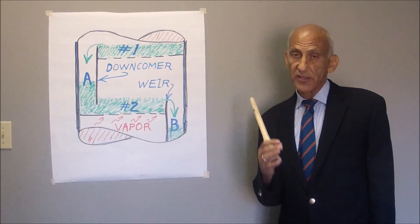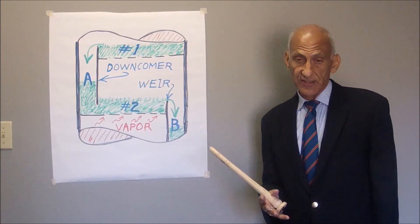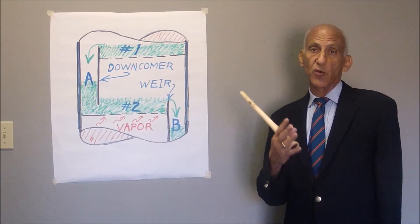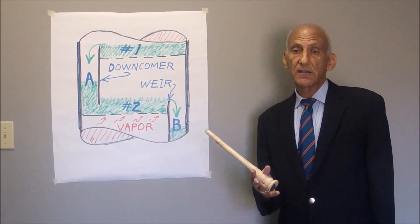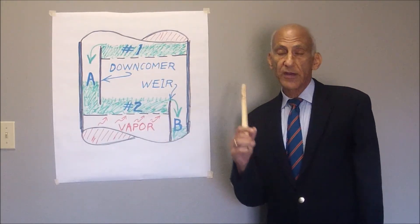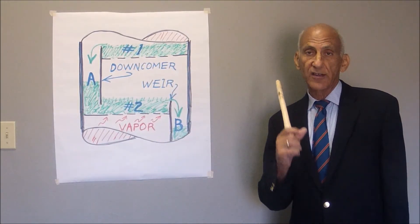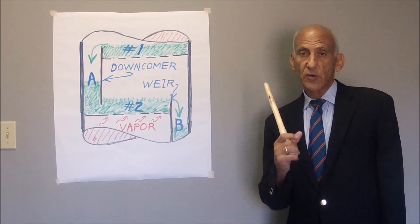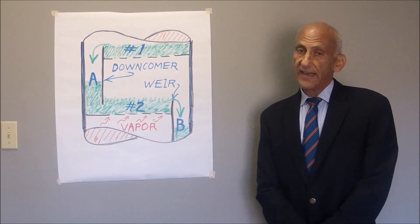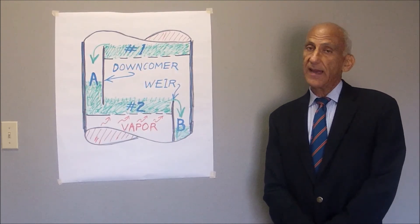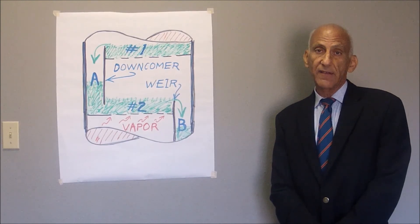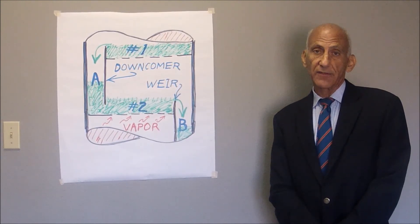We now have a very strange situation: in order to stop the tower from flooding, the vapor flow through the tower needs to be increased — which is just the opposite of what we normally think. The vapor flow through tray deck number two needs to be increased to restore the pressure drop and reestablish the downcomer seal. Unfortunately, this happens all the time because one of the big problems we have is trays that are somewhat out of level.